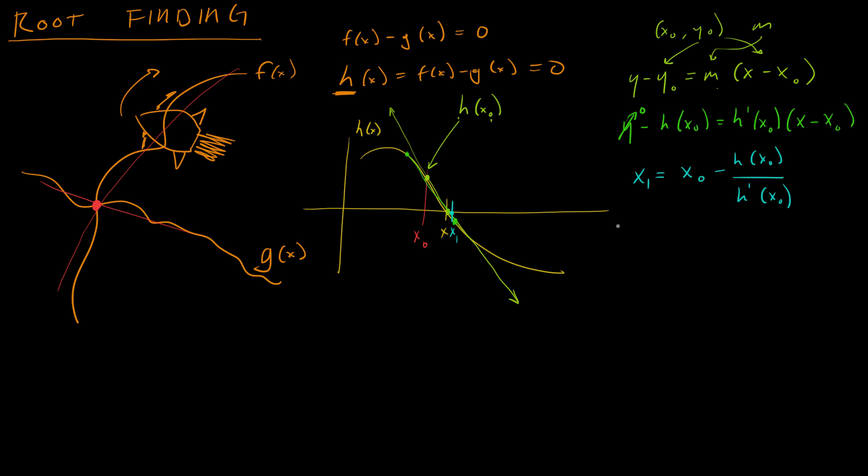And then I can do this over and over and over. Now, I can use x₁ as a new estimate. And it's a much better estimate. So if I do x₁ minus h(x₁) over h prime(x₁), then I get a new estimate, x₂.